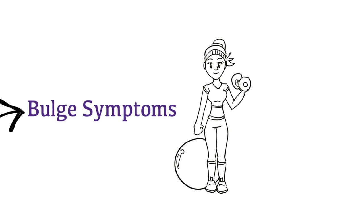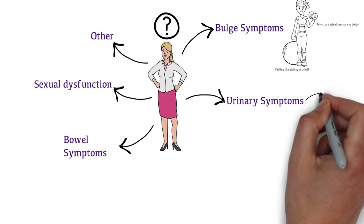For bulge symptoms, the patient may report feeling pelvic or vaginal pressure or feeling a vaginal bulge. They may feel like they are sitting on a ball or there is a bulge rubbing against their clothes. Bulge symptoms tend to worsen during the day and with physical activity.